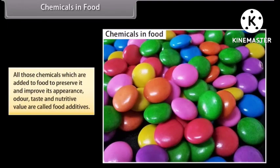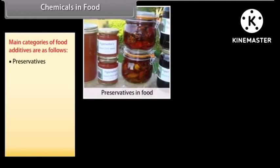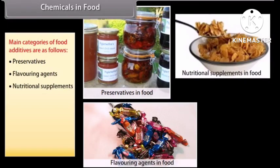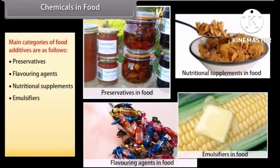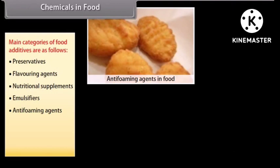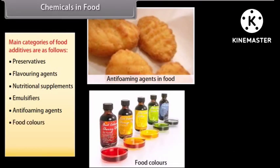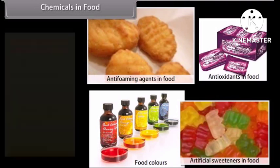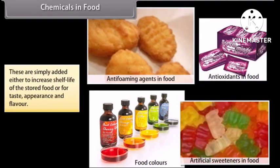All those chemicals which are added to food to preserve it and improve its appearance, odour, taste, and nutritive value are called food additives. Main categories of food additives are: preservatives, flavouring agents, nutritional supplements, emulsifiers, anti-foaming agents, and food colours. These are added either to increase the shelf life of stored food or for taste, appearance, and flavour.